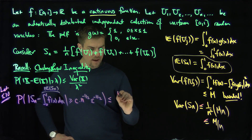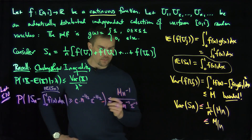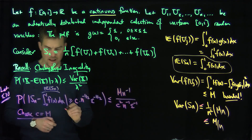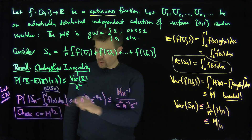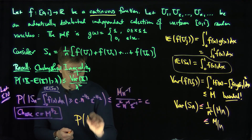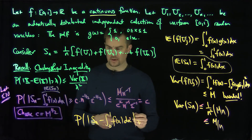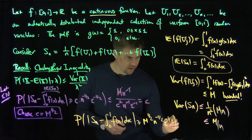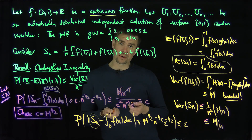So now at this point I'm going to choose C equal to m to the one half. With that particular choice of C, the m and C squared cancel out, and the n to the negative 1 terms cancel, leaving just epsilon. So the big result is: the probability that |Sn minus the integral from 0 to 1 of f(x) dx| is bigger than or equal to m to the one half times n to the negative one half times epsilon to the negative one half, is less than or equal to epsilon. This shows that Sn converges in probability to the integral from 0 to 1 of f(x) dx.